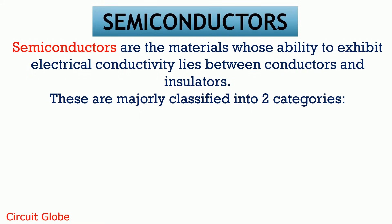Basically, semiconductors are those materials whose ability to conduct lies between conductors and insulators. We are already aware of the fact that conductors are those materials which possess good electrical conductivity, whereas insulators are those materials whose electrical conductivity is poor. So semiconductors are those materials whose conductivity is somewhat less than conductors but very much higher than an insulator.